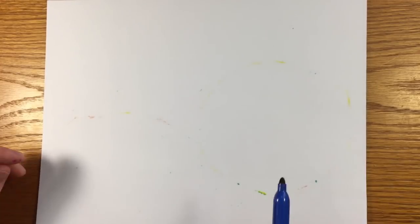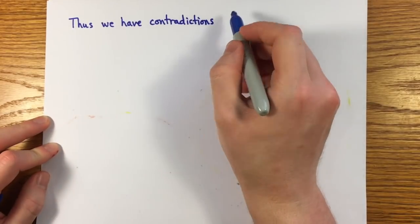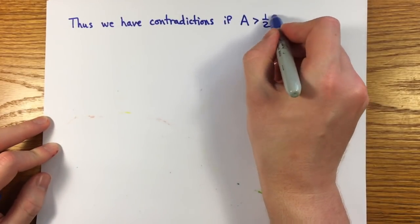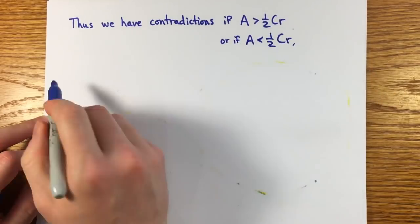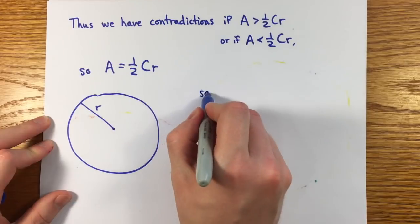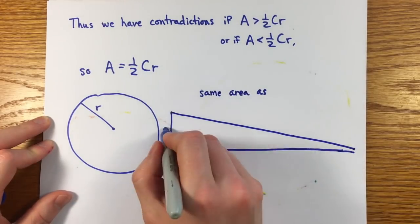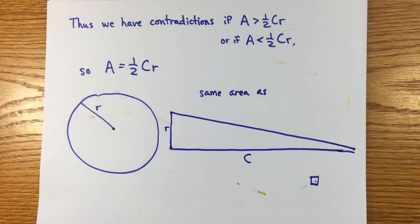Well, that finishes the proof. We found contradictions if the area A were greater than 1 half CR, and if A were less than 1 half CR, so A must be 1 half CR. Another way of putting it is that we showed directly that the increasing areas of inscribed regular polygons and decreasing areas of circumscribed regular polygons converge to the same limit.